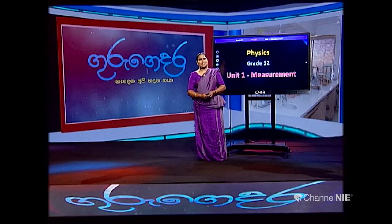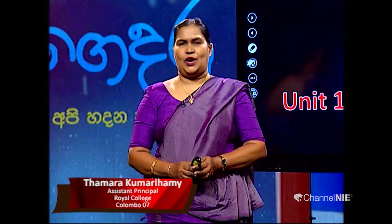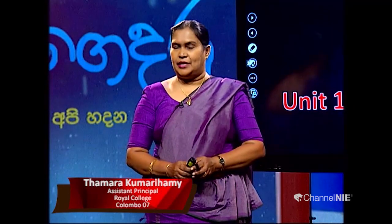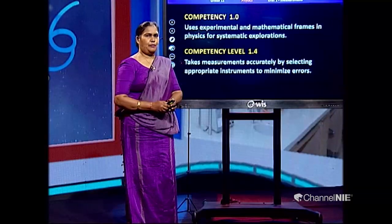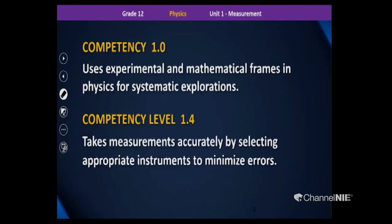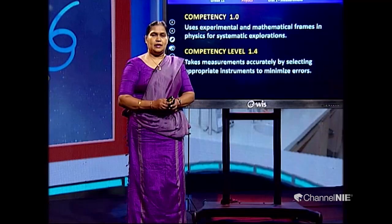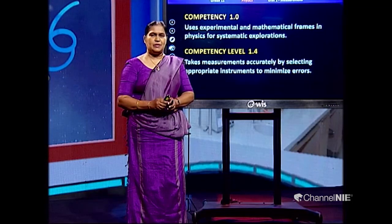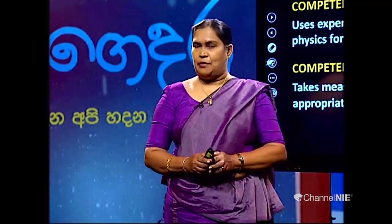Dear children, I welcome you all for the lesson today. Can you remember what we did during the last week? I explained unit 1: units and dimensions. Today you are going to learn the second part of unit 1 about measurement. Under this you will learn competency level 1.4 — we take measurements accurately by selecting appropriate instruments to minimize error. You have to select proper apparatus to take measurements accurately to minimize the error.